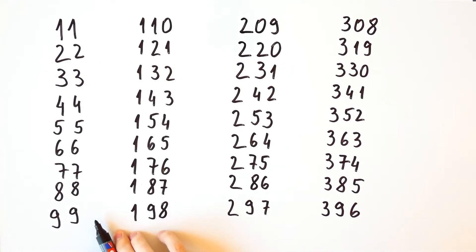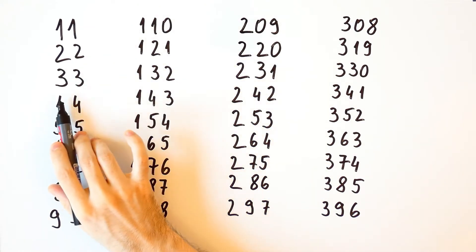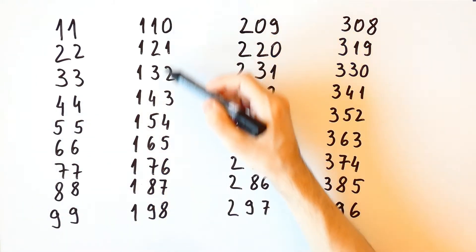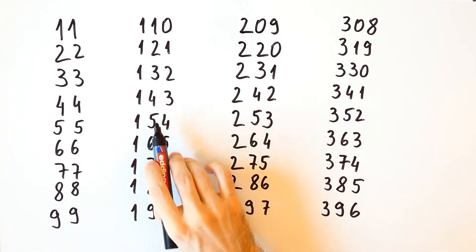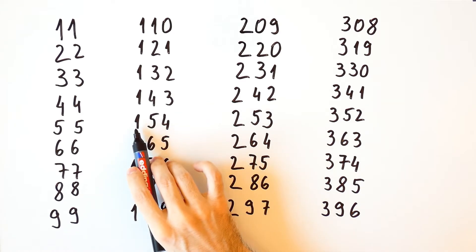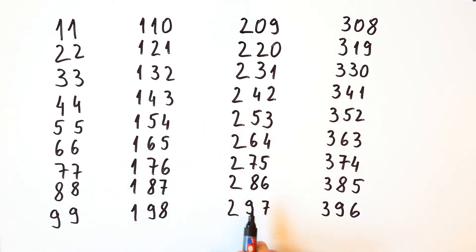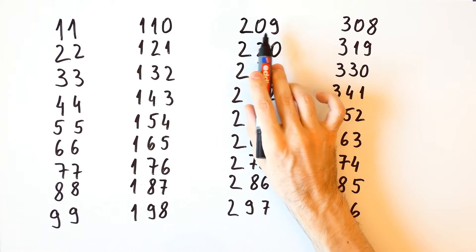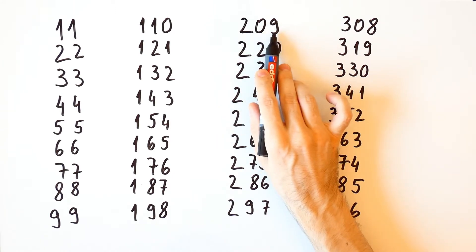Let's start by looking at some numbers that are divisible by 11. In the first column we have two-digit numbers, and for them the first and the second digit are equal. In the second column we have some three-digit numbers, and for them the second digit is equal to the sum of the first and the third digit. However, that is not the case for all numbers in the third column, because for 209 the second digit is 0 but 2 plus 9 is equal to 11.